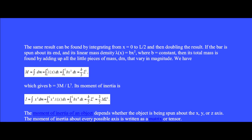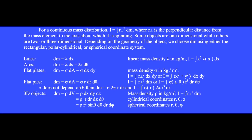The moment of inertia of an object depends on whether the object is being spun about the x, y, or z axis. The moment of inertia about every possible axis is written as a matrix or tensor. For a continuous mass distribution, the moment of inertia is I equals the integral of r perpendicular squared dm. Objects are one, two, or three dimensional and may have the shape of a line, arc, flat plate, block, cylinder, or sphere. Depending on the geometry, this differential mass dm becomes one of these expressions, so we keep this list handy.